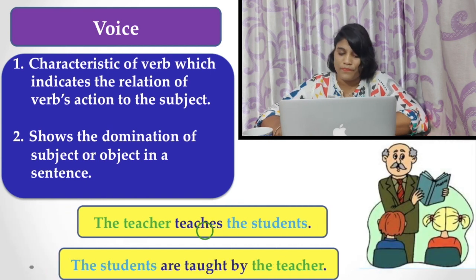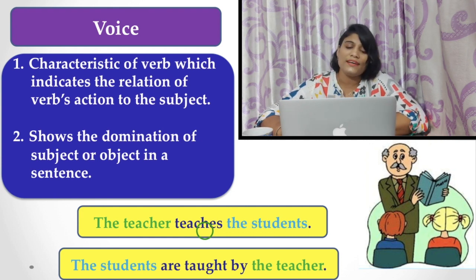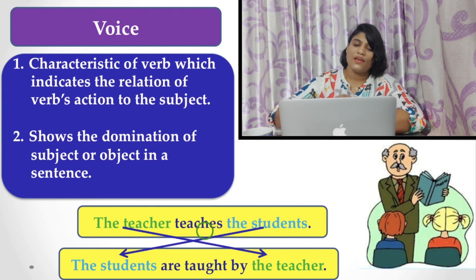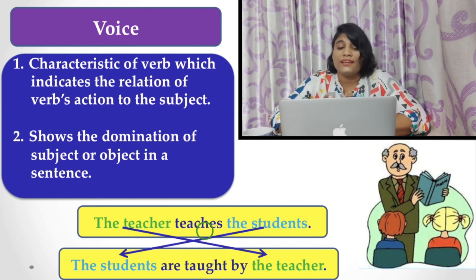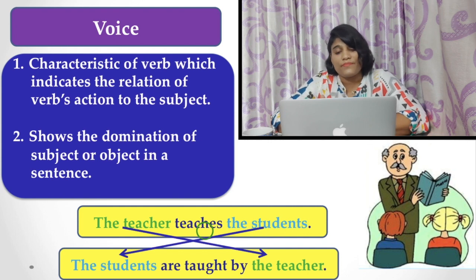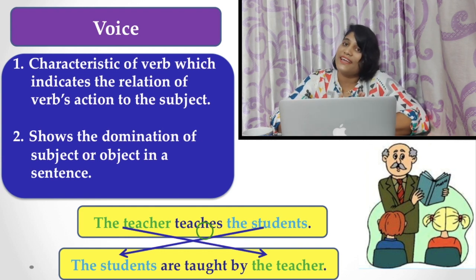Let's see more examples. The teacher teaches the students. And in the second sentence, the students are taught by the teacher. What is the difference? In the first sentence, who is the subject? Who teaches? The teacher. But in the second sentence, the subject 'teacher' becomes the object, whereas the student becomes the subject of the second sentence.